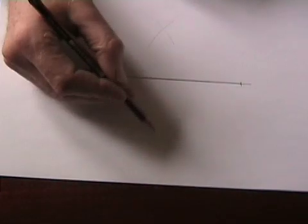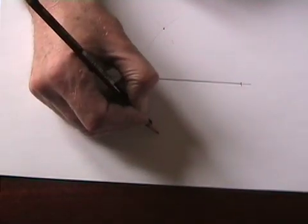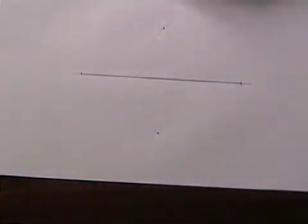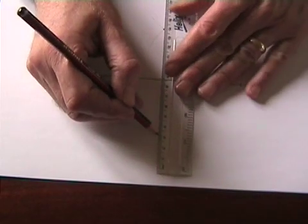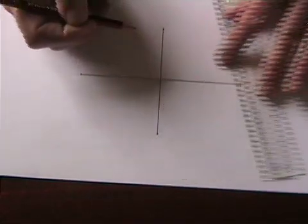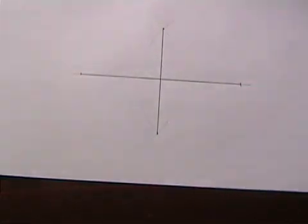Now points on this arc will be the same distance from this end and points on these arcs will be the same distance from that end. So the points where the arcs intersect should be the same distance from each end and I simply join those together and I have the perpendicular bisector of the line.